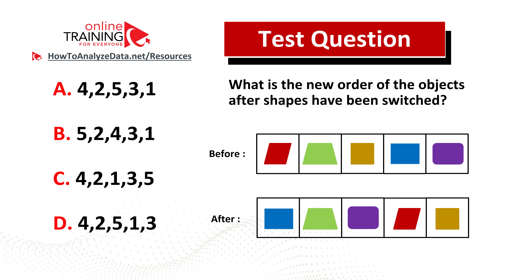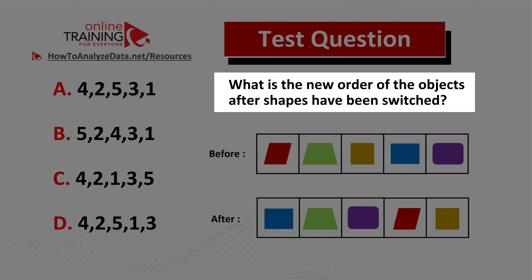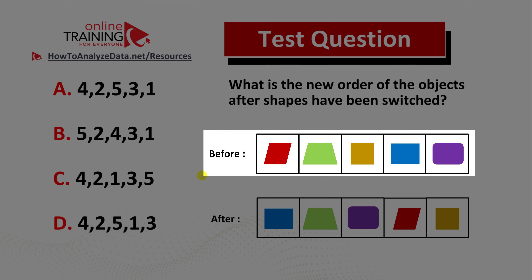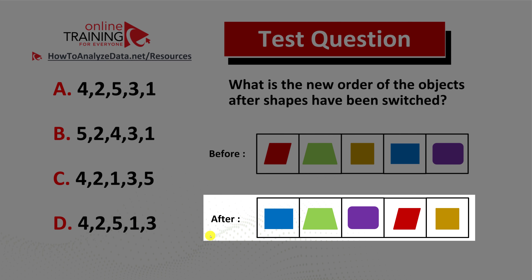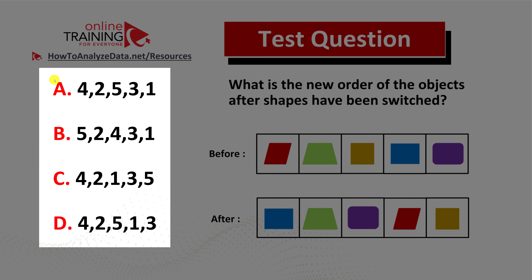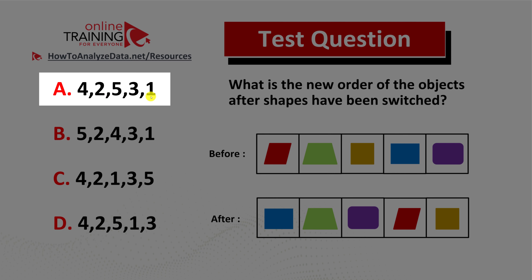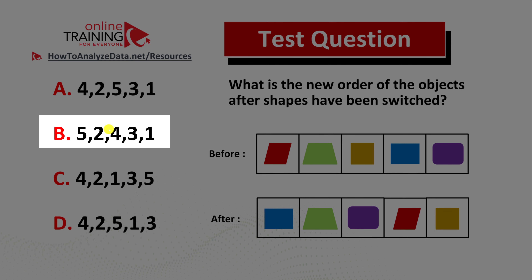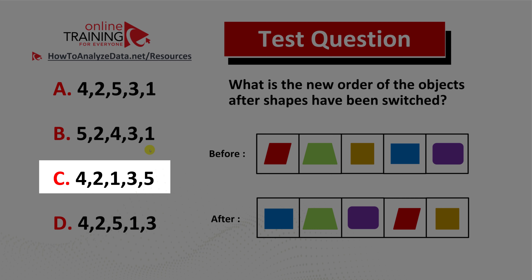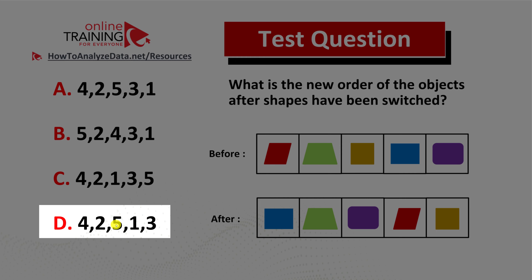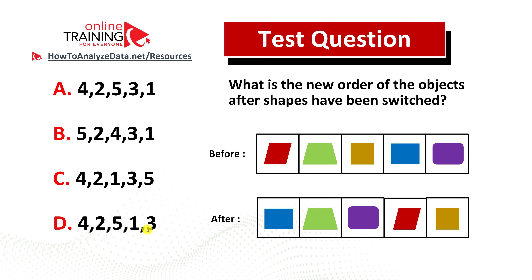Let's look at an interesting problem which you should be able to solve in under 30 seconds. What is the new order of the objects after shapes have been switched? You have a before order and an after order of objects, with four possible answers: choice A: 4 2 5 3 1; choice B: 5 2 4 3 1; choice C: 4 2 1 3 5; and choice D: 4 2 5 1 3. Try to pause this video to come up with the solution on your own.